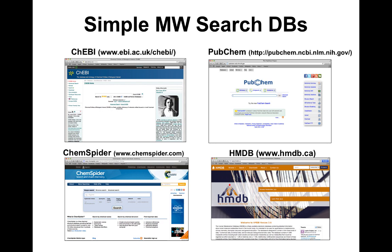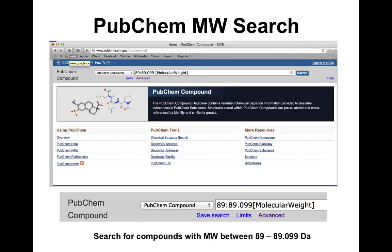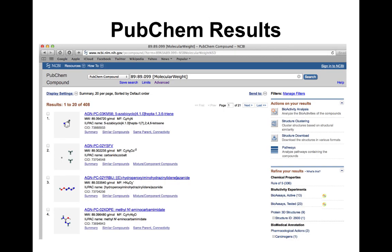For many years, and unfortunately still today, many people identify compounds purely by mass matching — finding something at 172.1634, uploading to KEGG, PubChem, ChemSpider, or HMDB, and simply asking for a hit. At PubChem, uploading a mass range of 89–89.1 Daltons returns over 400 matches. Choosing the first or fourth hit and calling it your compound is not good science.